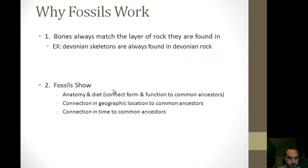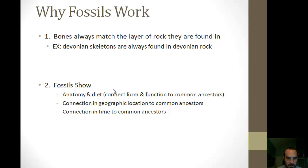The reason scientists use fossils is that all other soft tissue, after even hundreds of years, starts to disappear, and the only thing left over long periods of time are fossils. One important fact that allows the science of evolution to work is that bones always match the layer of rock they're found in. If scientists found a human fossil in Devonian rock, there'd be a huge problem, because the tree of life wouldn't match up with time periods — but we never see that. Scientists always find skeletons in the right layers of rock.